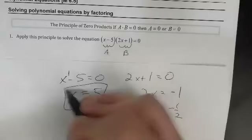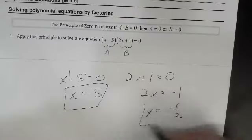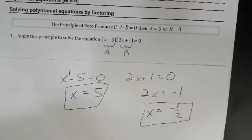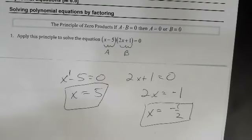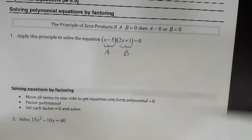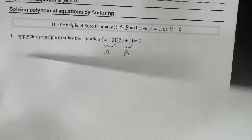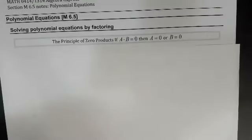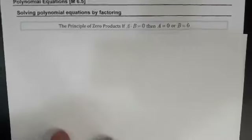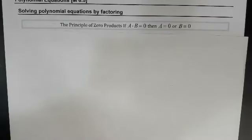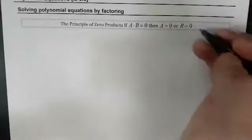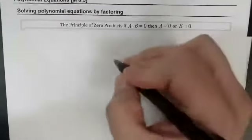So I have two solutions: X equals five, and X equals minus one-half. This is the Zero Product Principle: a times b equals zero gives us either a equals zero or b equals zero.